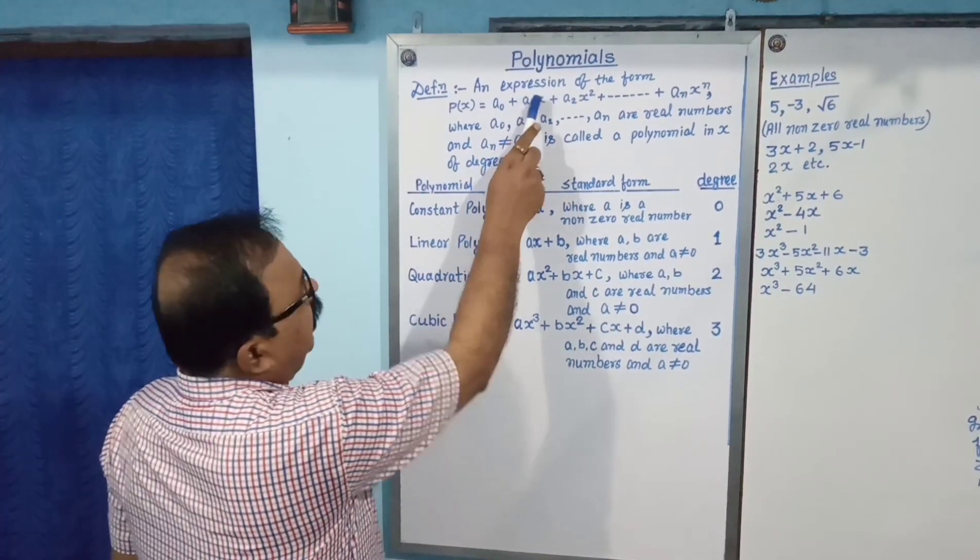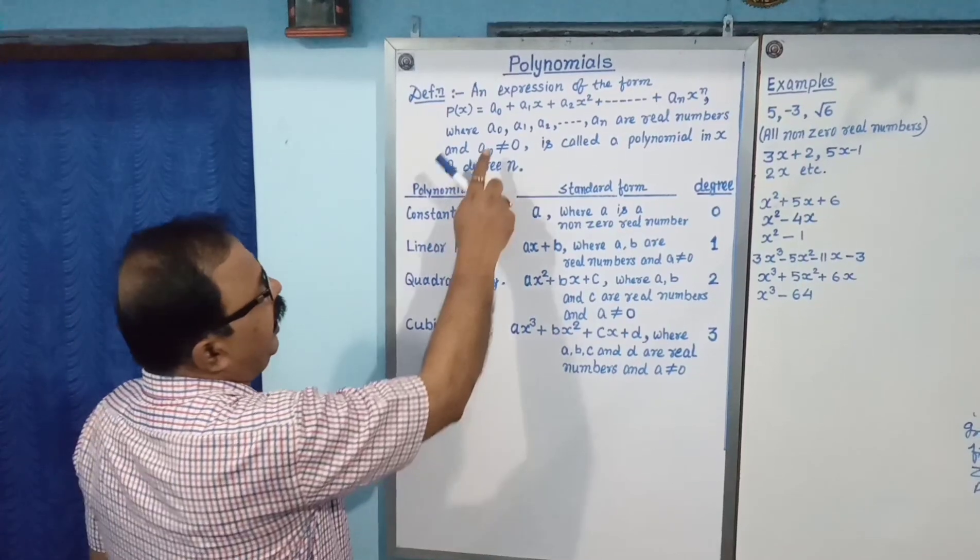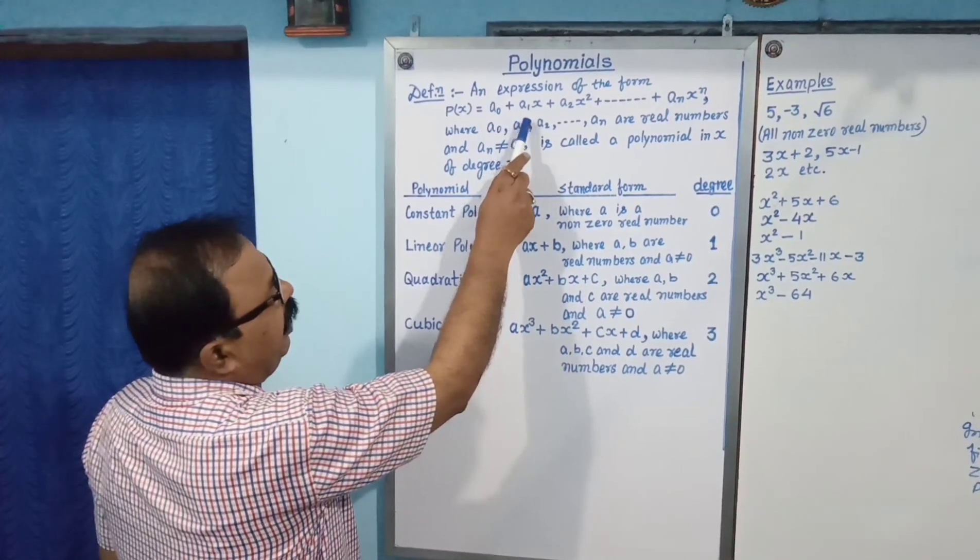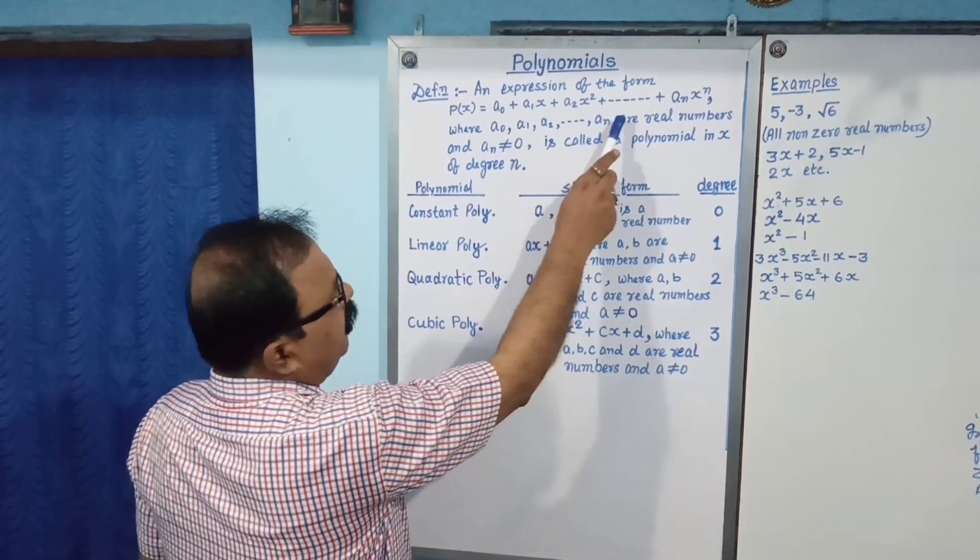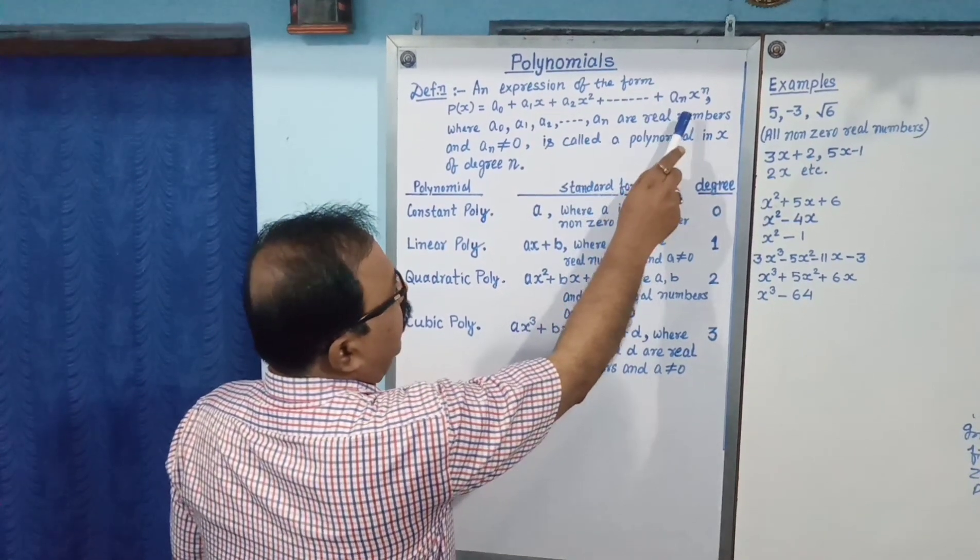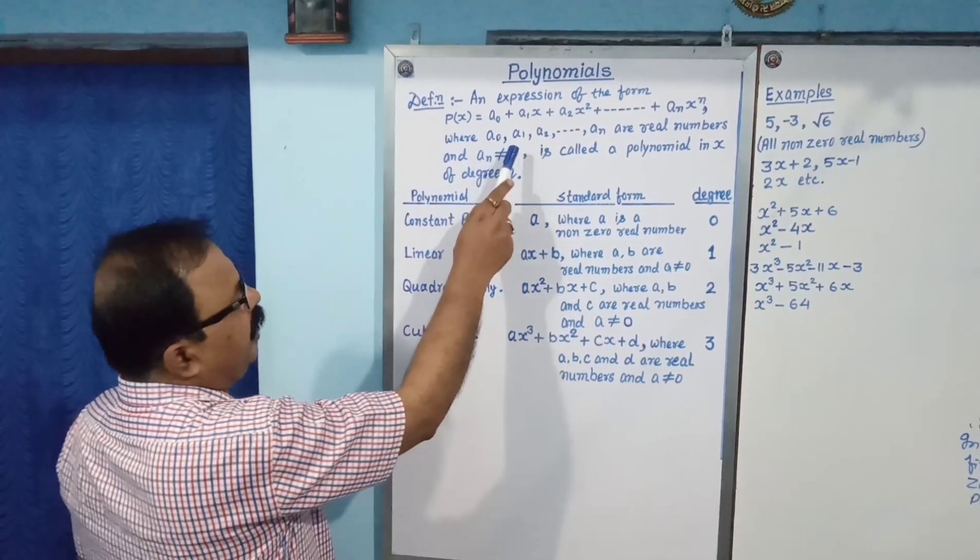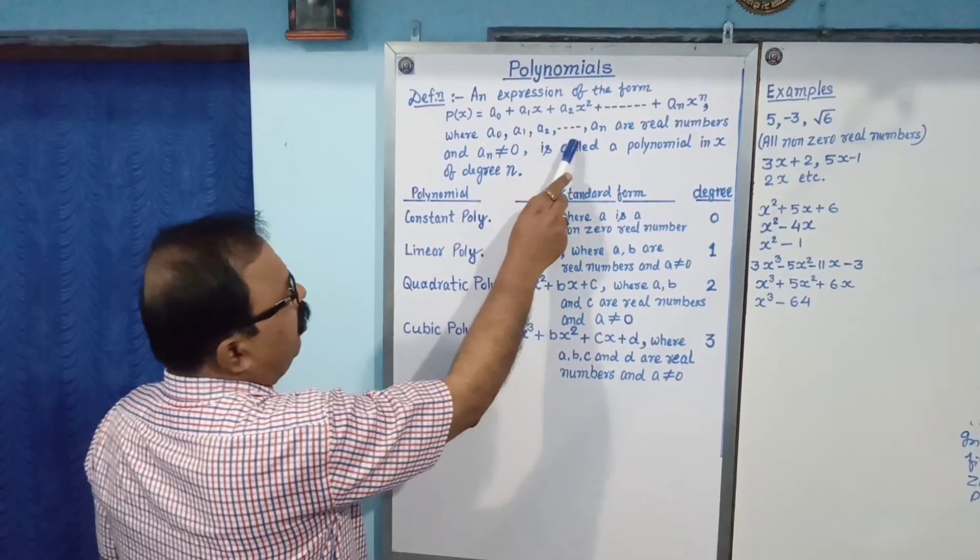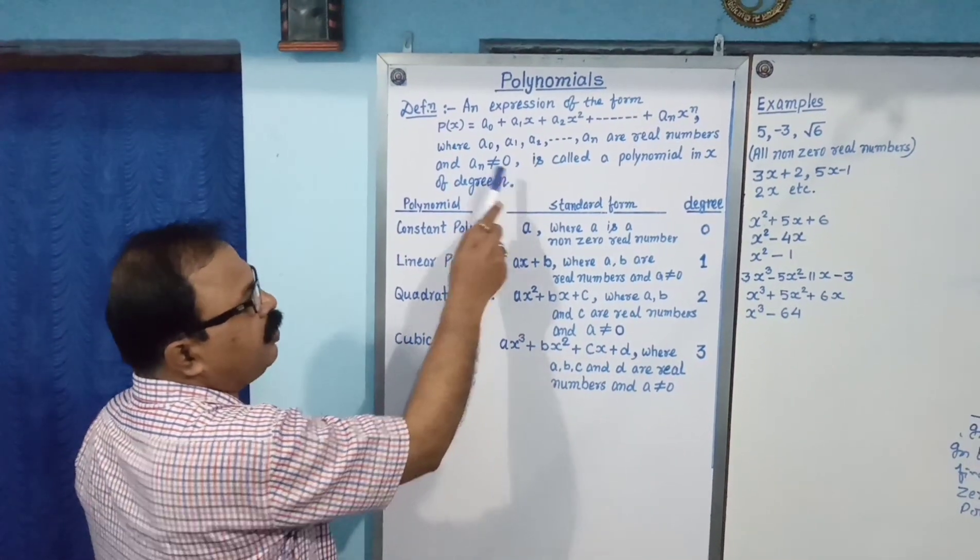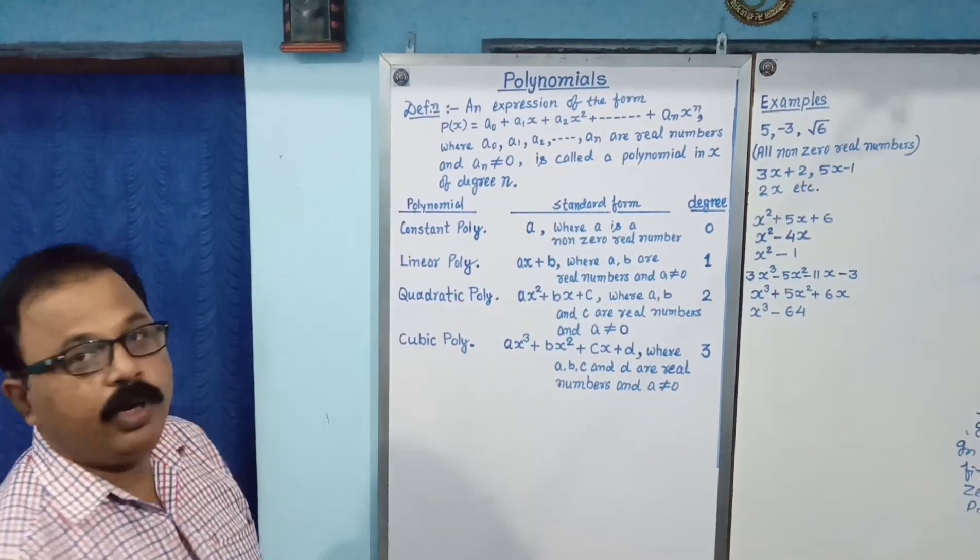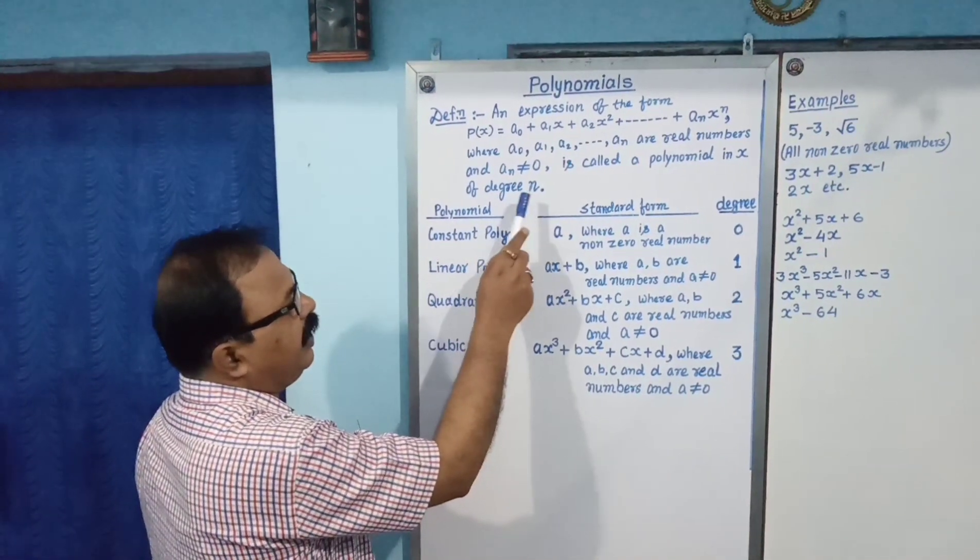Any expression of the form P(x) equal to a0 plus a1x plus a2x square plus dot dot dot plus an x to the power n, where a0, a1, a2, dot dot dot, an are real numbers, and an not equal to 0 is called a polynomial in x variable of degree n.